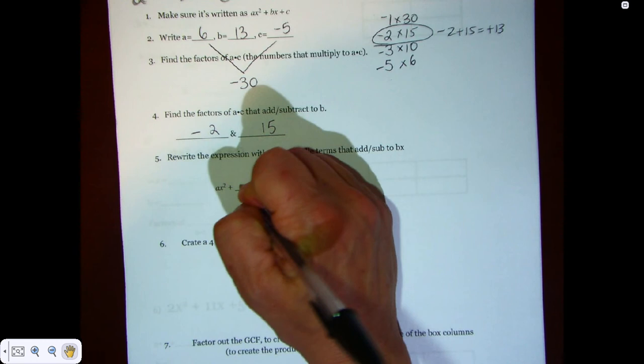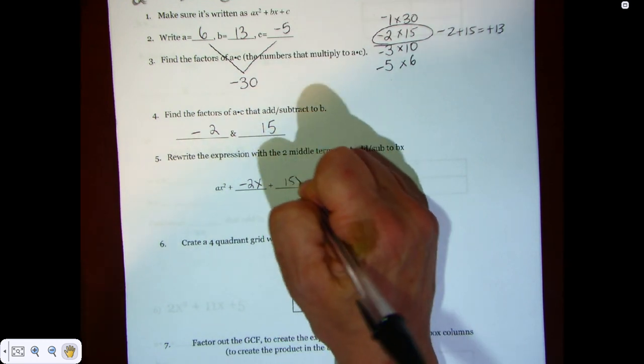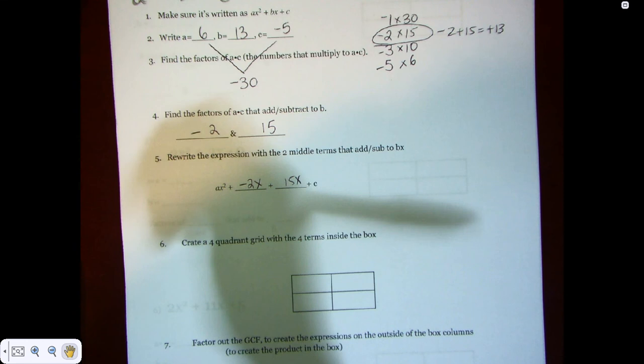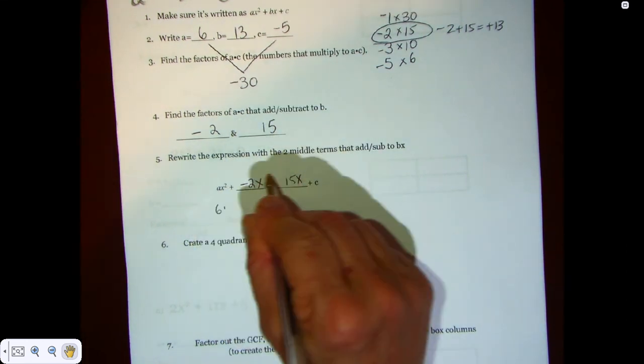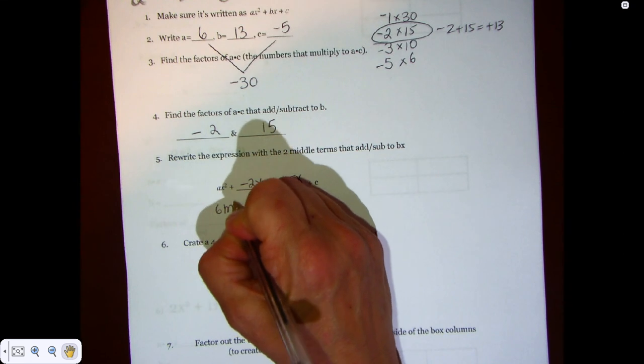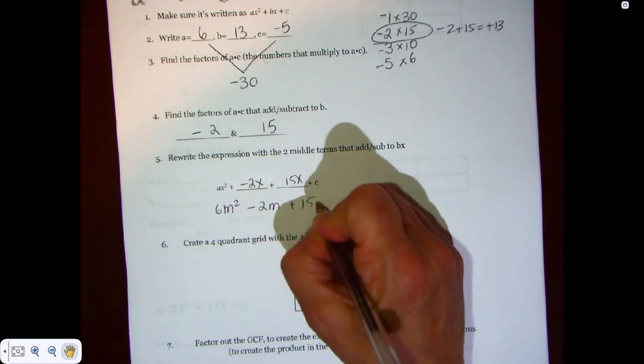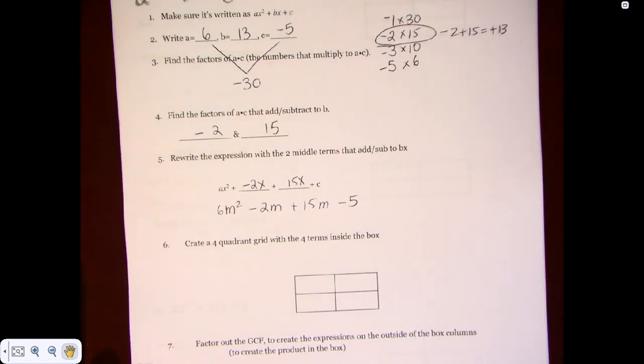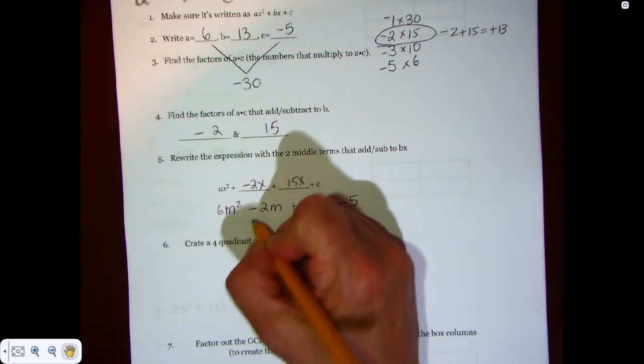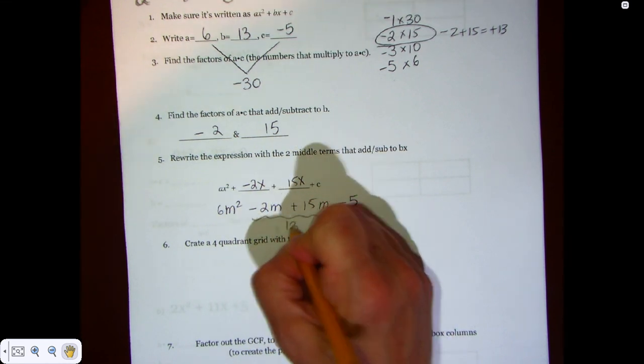So we're going to write negative 2 and 15. Those are the factors, and now we're going to put them here. It's negative 2x and 15x. For ax squared, we're going to go 6... oh, I called it x, but it's m. 6m squared, negative 2m, plus 15m, minus 5. These two numbers in the middle add up to 13m.